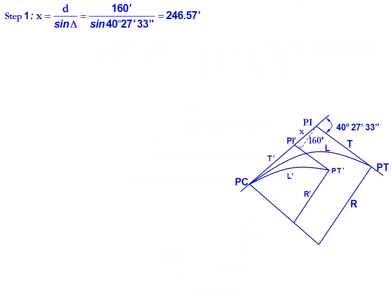So our first step is to find X. We'll take this by dividing our distance that we move parallel, 160, by the sine of delta. That's the sine of 40 degrees 27 minutes 33 seconds. So we'll have an X of 246.57 feet.